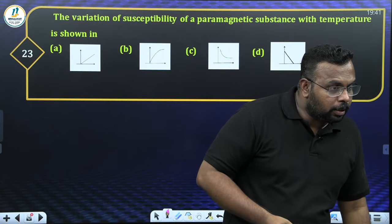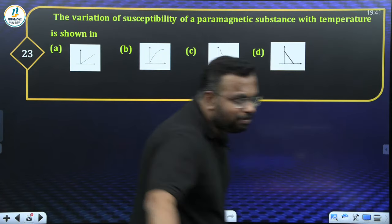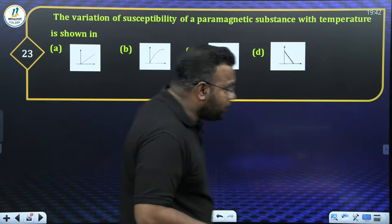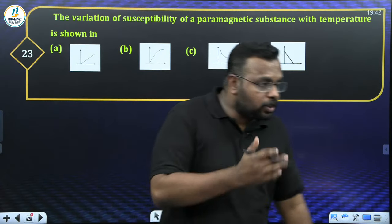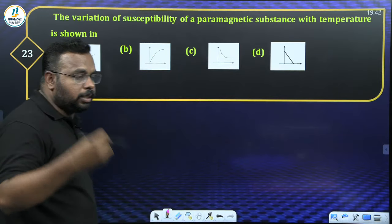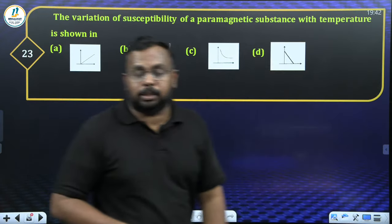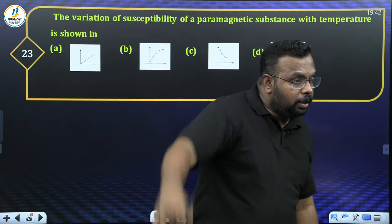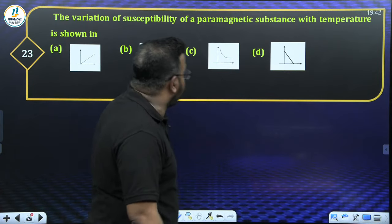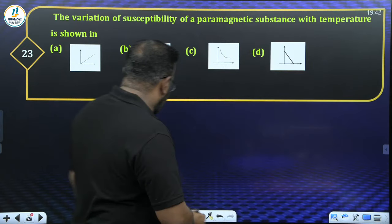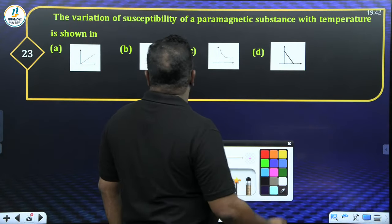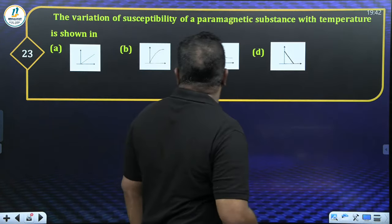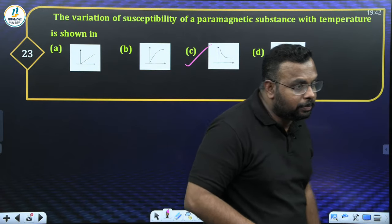Question 23: The variation of susceptibility of a paramagnetic substance with temperature is shown — which graph? Susceptibility of paramagnetic is inversely proportional to temperature (Curie's law). For ferromagnetic, it is also inversely proportional, and at the Curie temperature the substance becomes paramagnetic. The graph showing inverse proportionality is the correct answer.